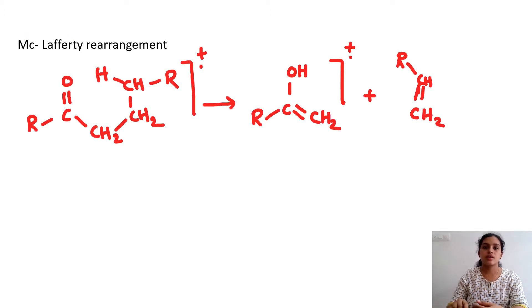And this is the McLafferty rearrangement. You should remember the requirement: there should be a gamma hydrogen, and this gamma hydrogen abstraction is followed by alpha beta cleavage. So this is alpha, beta and gamma carbon atoms, and this gamma hydrogen is abstracted by this oxygen atom.